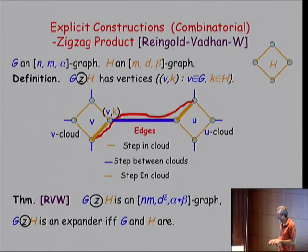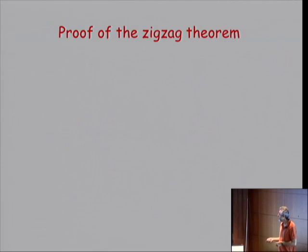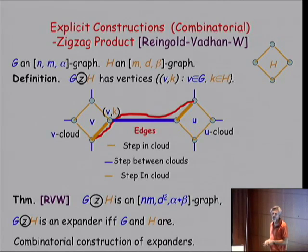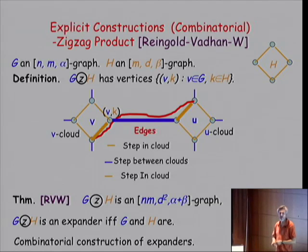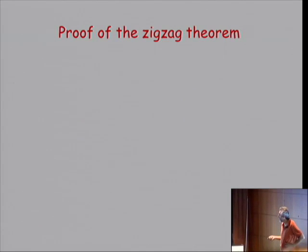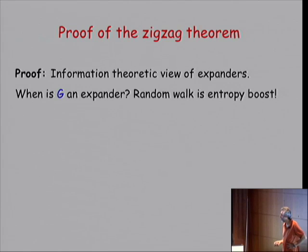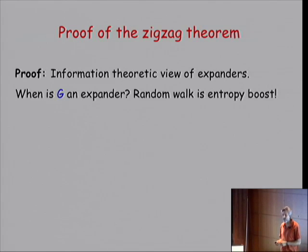That's the magic, and it leads directly to a combinatorial construction of expanders. Before showing that, I want to sketch the proof of the ZigZag theorem. I'll show you the intuition — the proof is linear algebra which follows this intuition precisely. What I really like is that these are expanders for which I understand why they are expanding. For the proof, it's useful to view expanders information-theoretically: these are graphs for which each time you make a step in a random walk, your probability distribution gets an entropy boost.